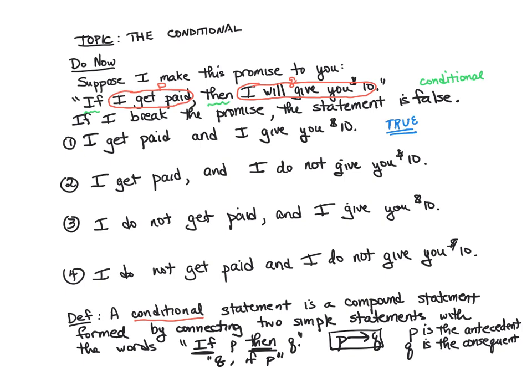Let's look at number two: I get paid but I do not give you $10. In this situation you would be upset with me because I broke my promise. I did say that if I get paid I'll give you $10, and I did get paid but I didn't give you $10. So this scenario — the conditional is false. I broke my promise.